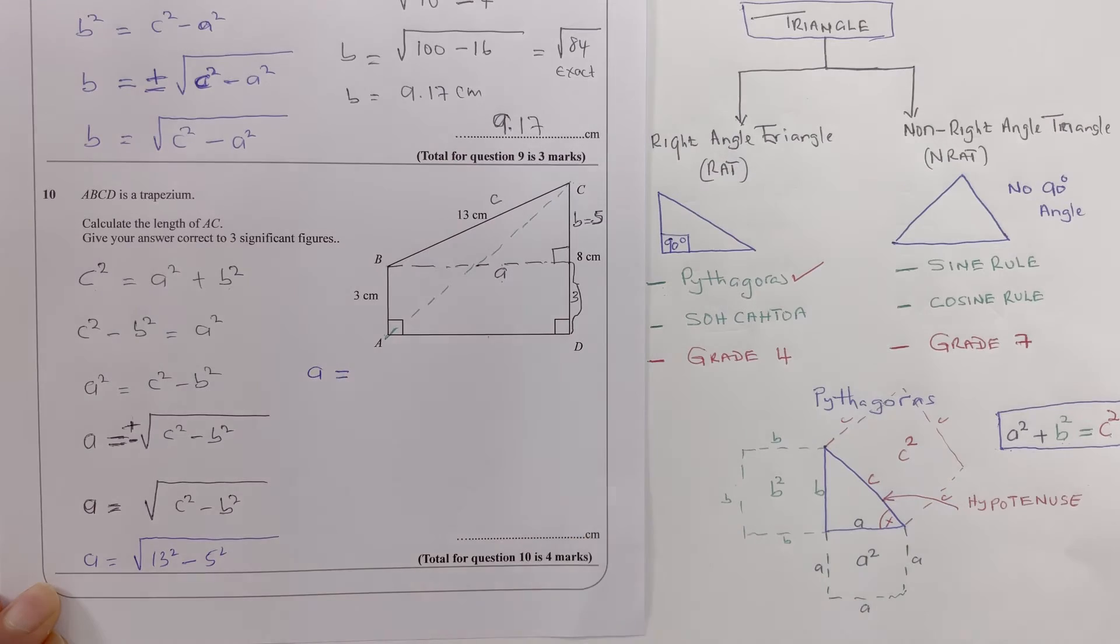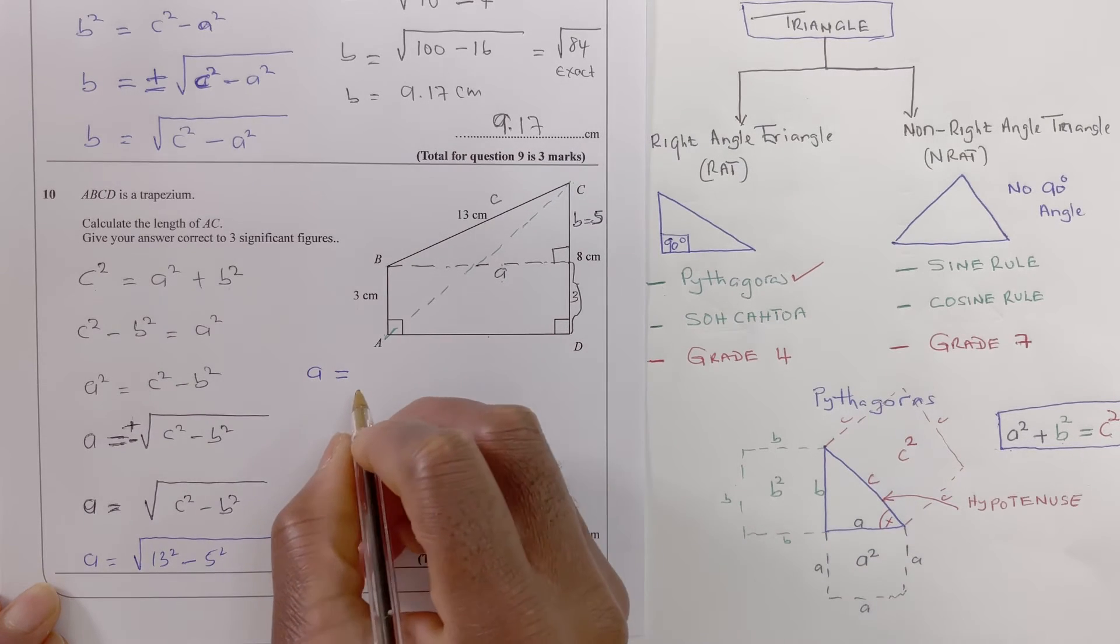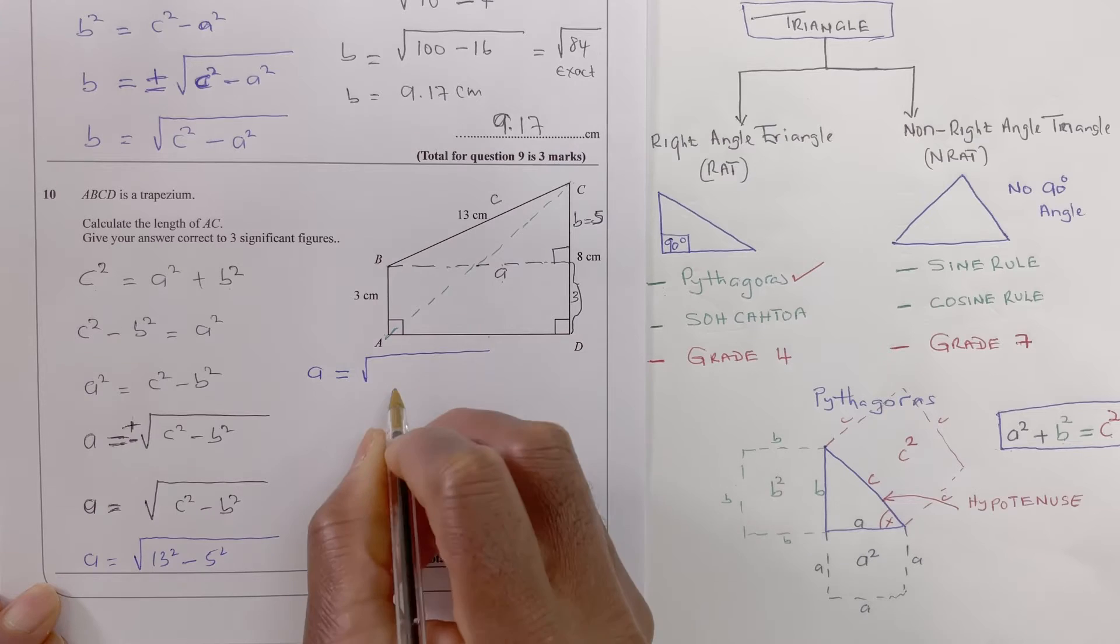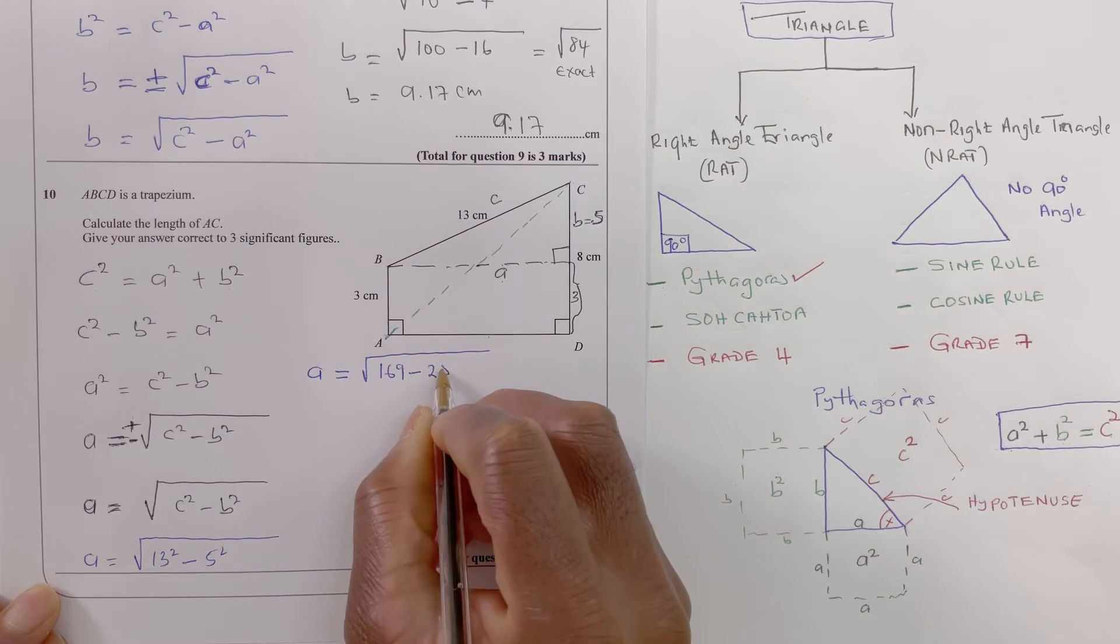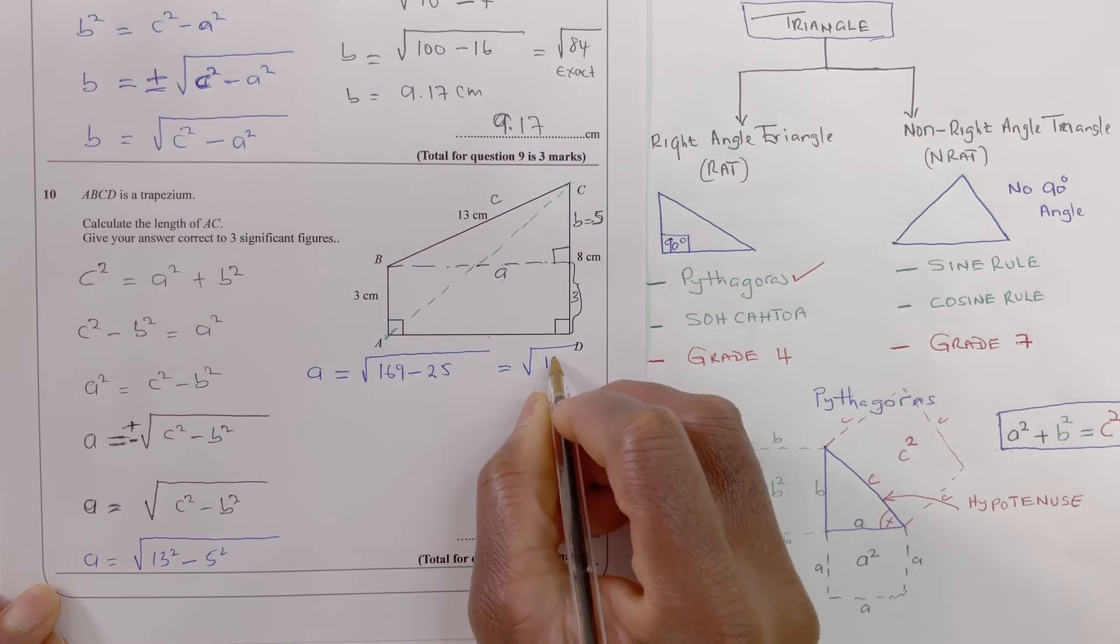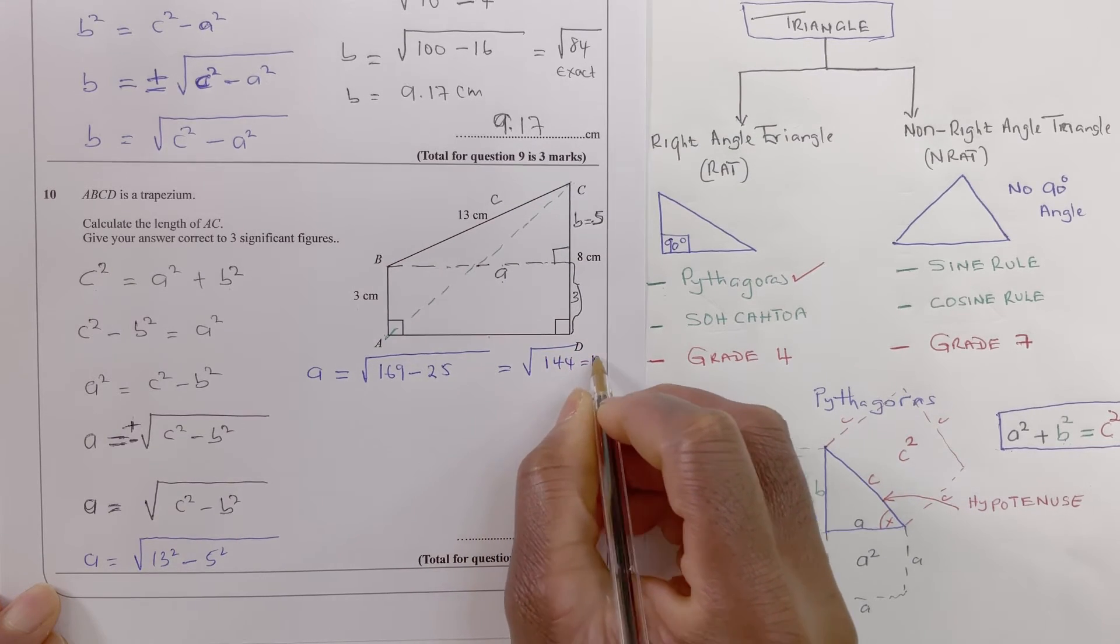So that means a is equal to root 169 minus 25 which is root 144 which is 12.